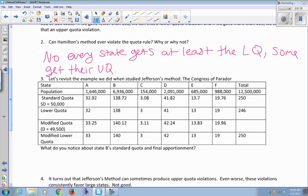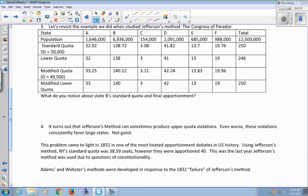So let's look at what happens with the Congress of Peridore with Jefferson's method in light of the quota rule. So we already did this all out in a previous lesson. And I just want to look at the results for state B. Look at their standard quota, their exact fair share, versus how many seats they were awarded.